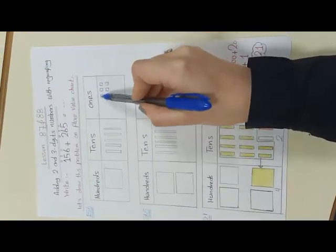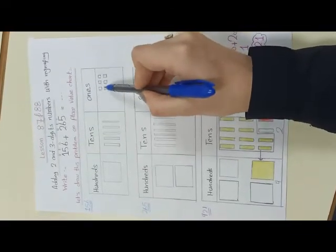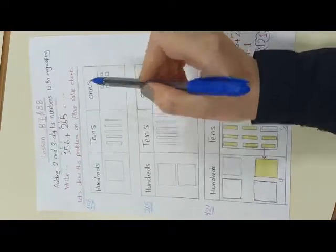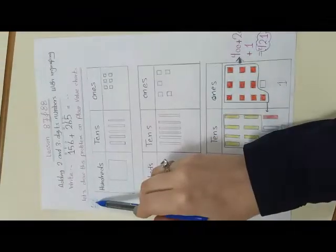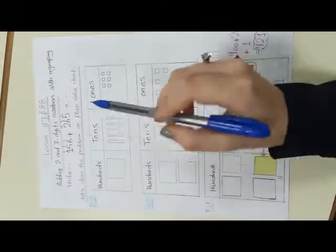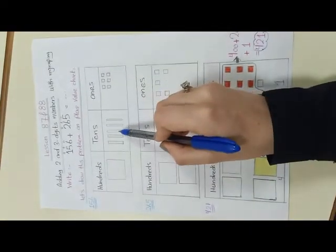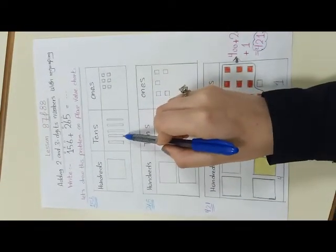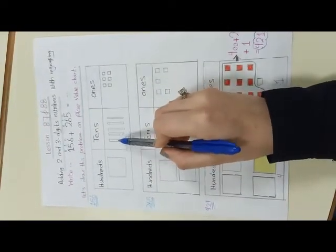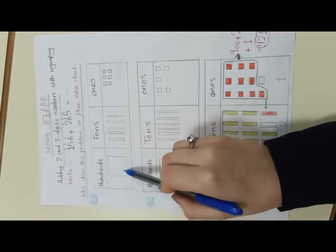I draw 6 squares: 1, 2, 3, 4, 5, 6. And 5 in the tens — I will draw 5 sticks in tens: 1, 2, 3, 4, 5. And just 1 in the hundreds, so I will draw 1 square in hundreds.